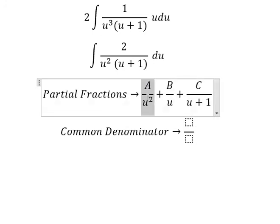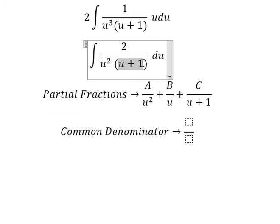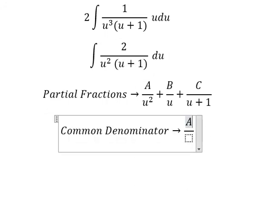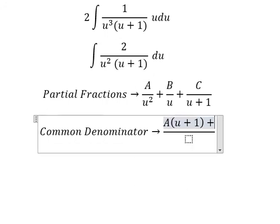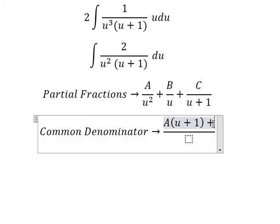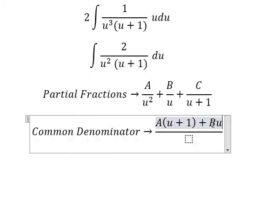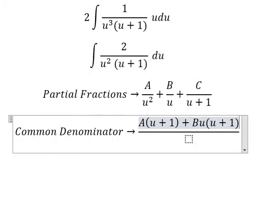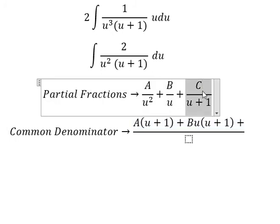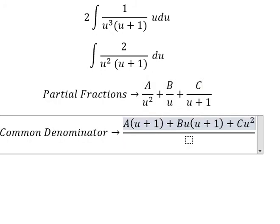Now we find the common denominator. This term is missing u plus one, giving us capital A multiplied by u plus one. This term is missing u and u plus one, and this term is missing u squared.